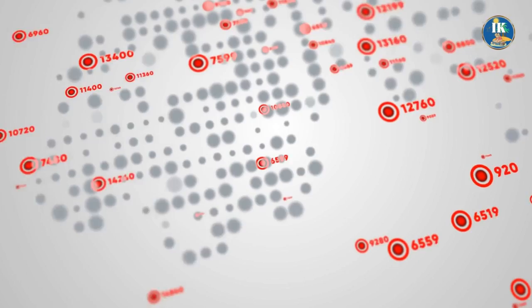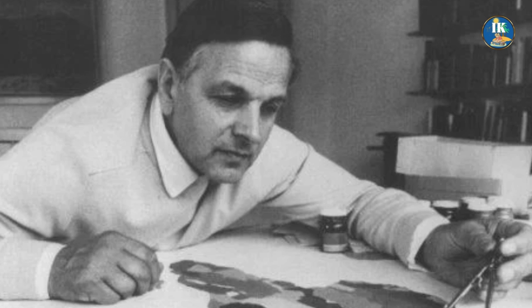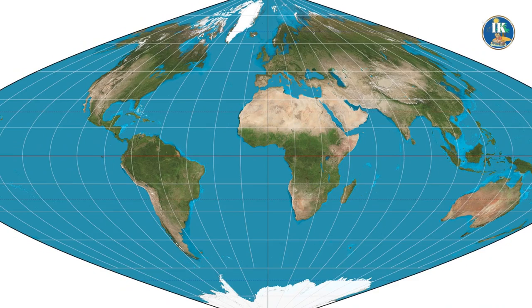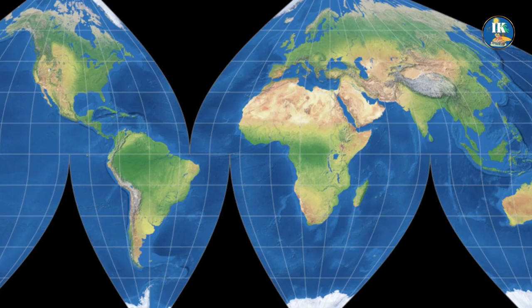Fortunately, there are alternatives to the Mercator projection that have been developed over the years. One such projection is the Peters projection, created by German historian Arno Peters in the 1970s. The Peters projection is an equal area projection, which means that it accurately represents the relative size of different countries and continents. This is achieved by distorting the shape of landmasses so that they may look elongated or squished in some areas, but the relative sizes are maintained.